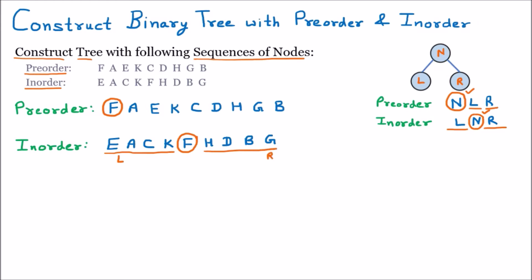The left-hand side of F in the in-order is the left subtree, and the right-hand side is the right subtree. Now we match these left and right subtree elements into the pre-order. E is matched, A is matched, C is matched, K is matched — so this portion is the left subtree. Then matching the right subtree: H, D, B, G are all matched. So this portion is the right subtree. We have successfully found the root node in the first step.